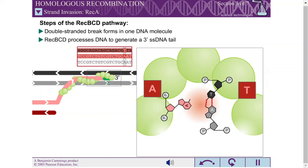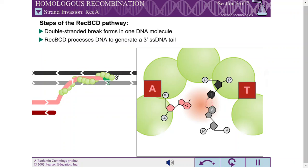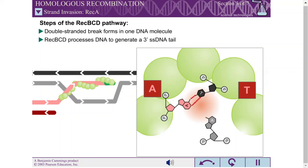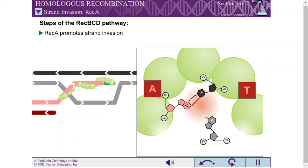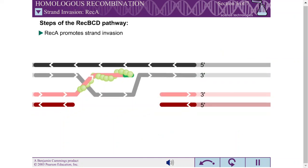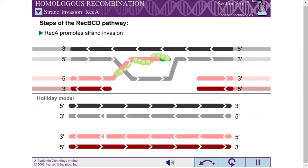Once a region of base pair complementarity is located, REC-A promotes the formation of a stable complex between the single-stranded DNA tail in the primary site and the complementary strand of the double-stranded DNA molecule in the secondary site. As in the Holliday model, this step is called strand invasion.